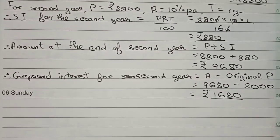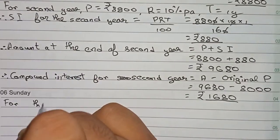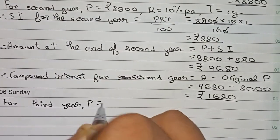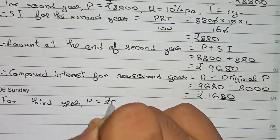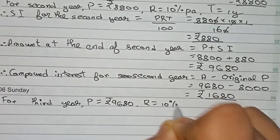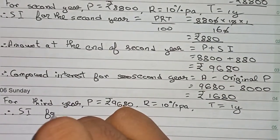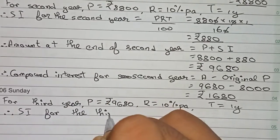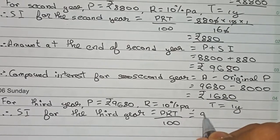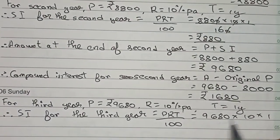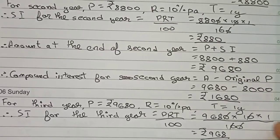Now I have to find the amount due at the end of the third year. For the third year, the principal becomes the amount at the end of the second year, which is 9680. Rate is 10 percent per annum and time is one year. SI for the third year = 9680 × 10 × 1 / 100 = rupees 968.